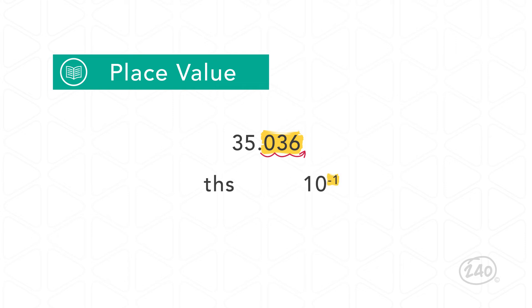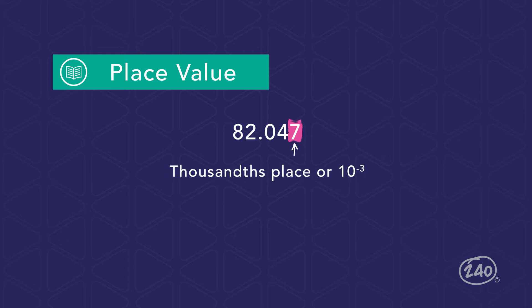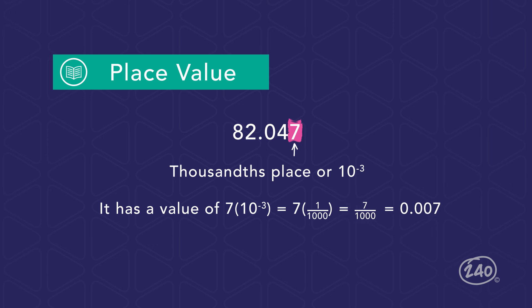For example, the 7 in the number 82.047 is in the thousandths place, or the 10 to the negative third place. It has a value of 7 × 10 to the negative third, which is equal to 7 × 1/1,000. This is equivalent to 7 thousandths.